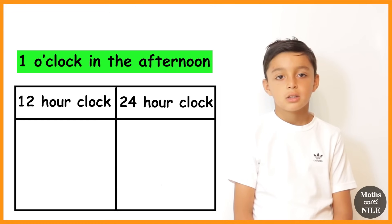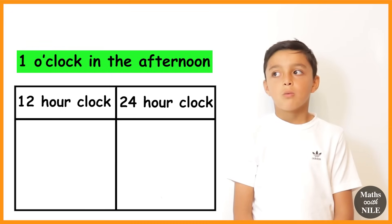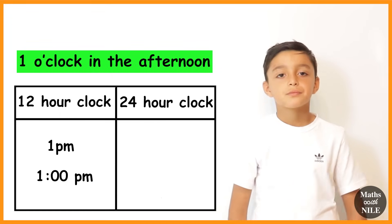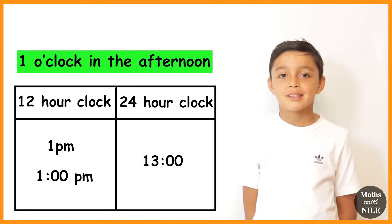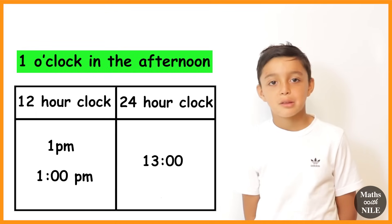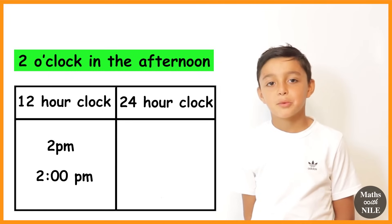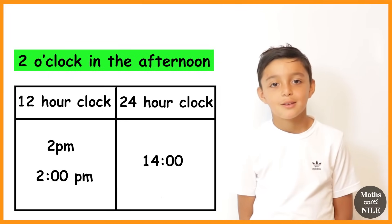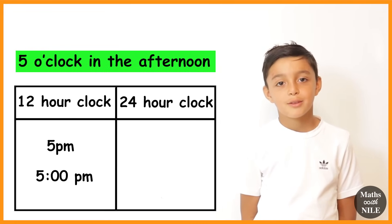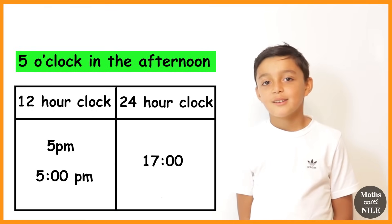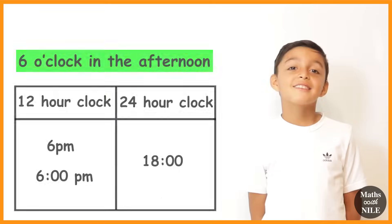Now we go on to 1 o'clock in the afternoon. How do you say it on a 12-hour clock? 1 p.m. But on the 24-hour clock it goes over 12 — it turns into 1,300 hours. And 2 o'clock in the afternoon? 1,400 hours. 3 o'clock? 1,500 hours. 4 o'clock? 1,600 hours. 5 o'clock? 1,700 hours. 6 o'clock? 1,800 hours. And it continues.